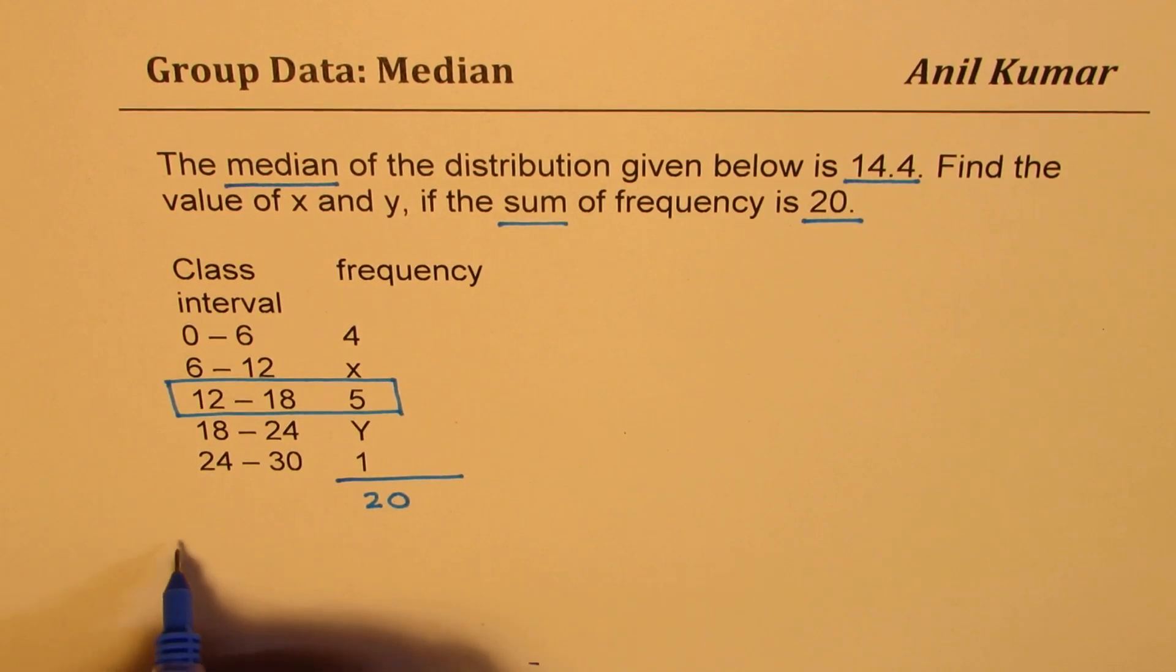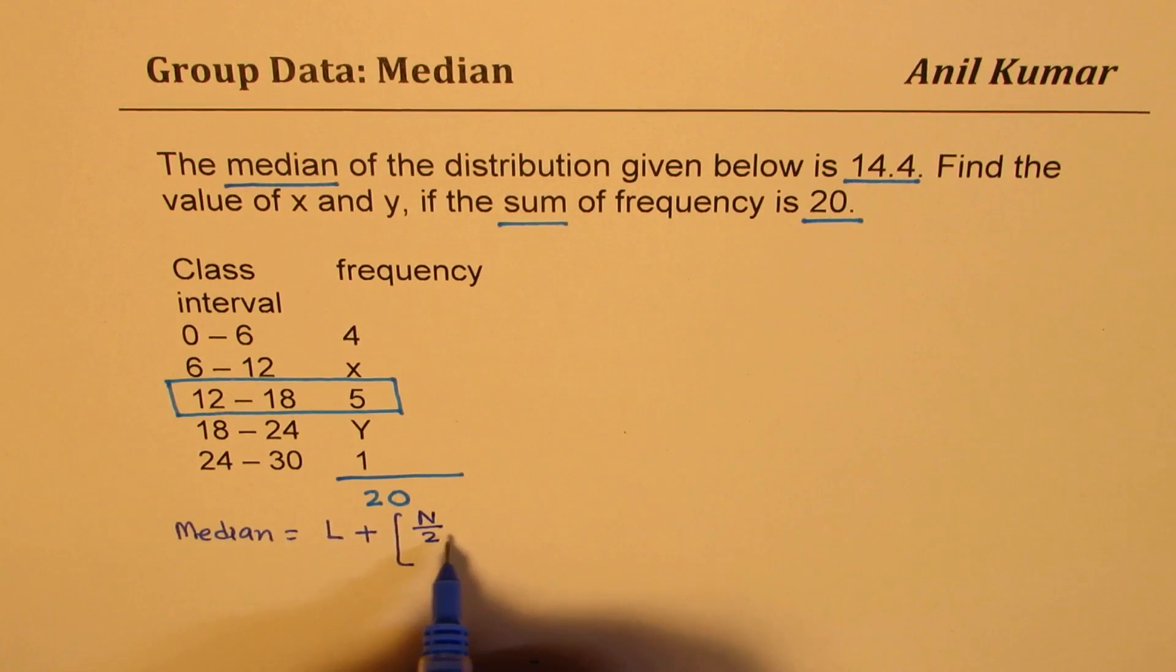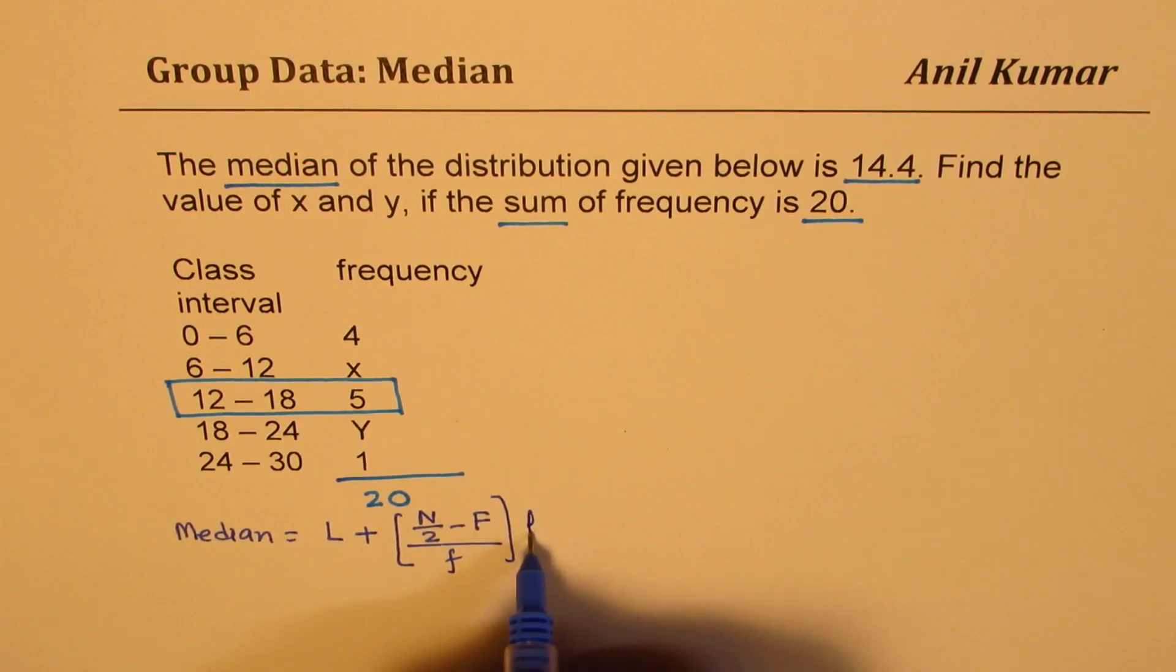Now for median, the formula is: median equals lower limit L plus, we look for n over 2 minus cumulative frequency, over the frequency f, times the interval h.